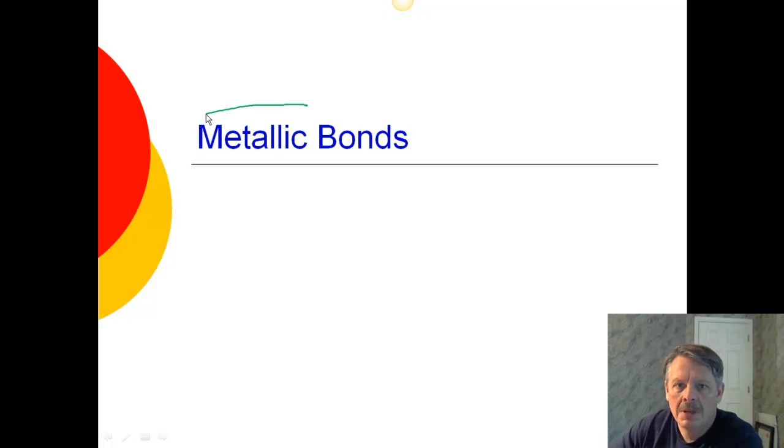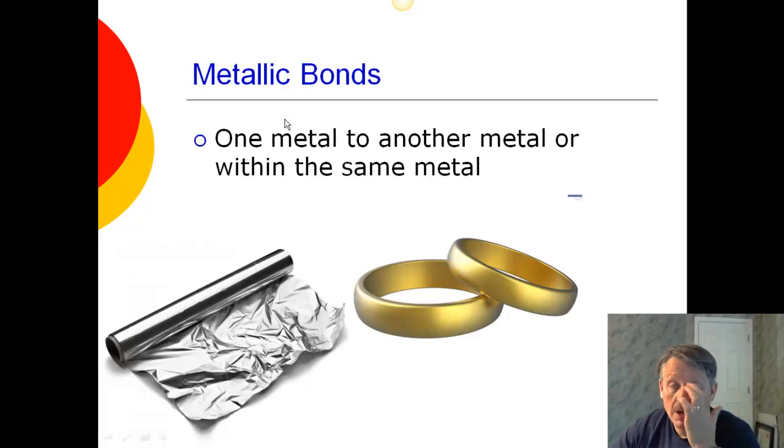Alright folks, today we're going to talk about metallic bonds. Those would be pretty obvious of what those have to do with. Sure, they have to do with metals. So metallic bonds, when one metal bonds to another metal, or within the same metal.